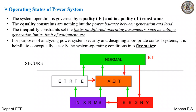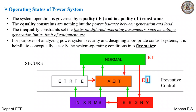Next is the alert state. Preventive control actions have to be taken here; only then does it move from alert state to normal state. Equality and inequality constraints are balanced; however, the reserve margins are reduced, meaning there is a possibility that some inequality constraints may be violated, placing the system in emergency state. This is actually an insecure state. If preventive control actions are taken, the system moves from alert to normal; if not, it moves to emergency state.